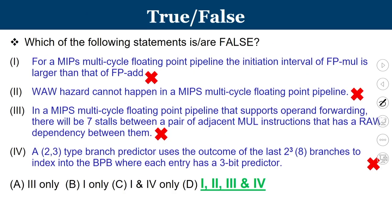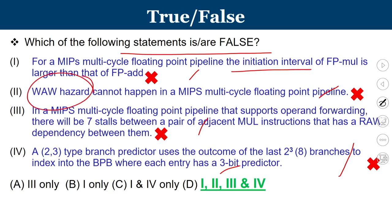All four statements are false. To answer correctly, one must be clear about the concept of initiation interval, the hazards that occur in a multi-cycle floating point pipeline, the stalling behavior due to data dependencies between instructions, and the meaning of the numbers in correlating branch predictor notation.